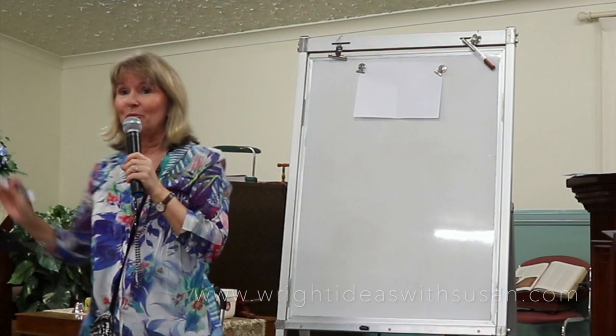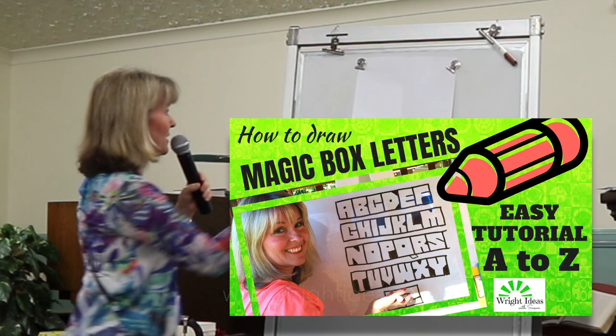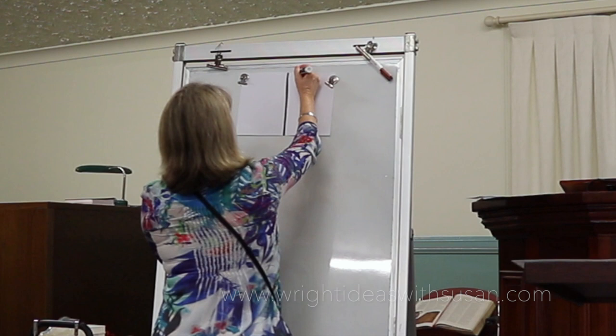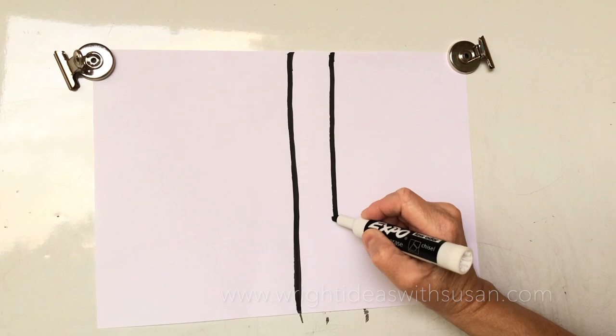Since Easter is coming up, we are going to write the word Easter in box letters — magic box letters. So what I want you to do is draw a line all the way down the middle of your paper, and then draw a line down next to it, giving it about two centimeters next to it, like that.